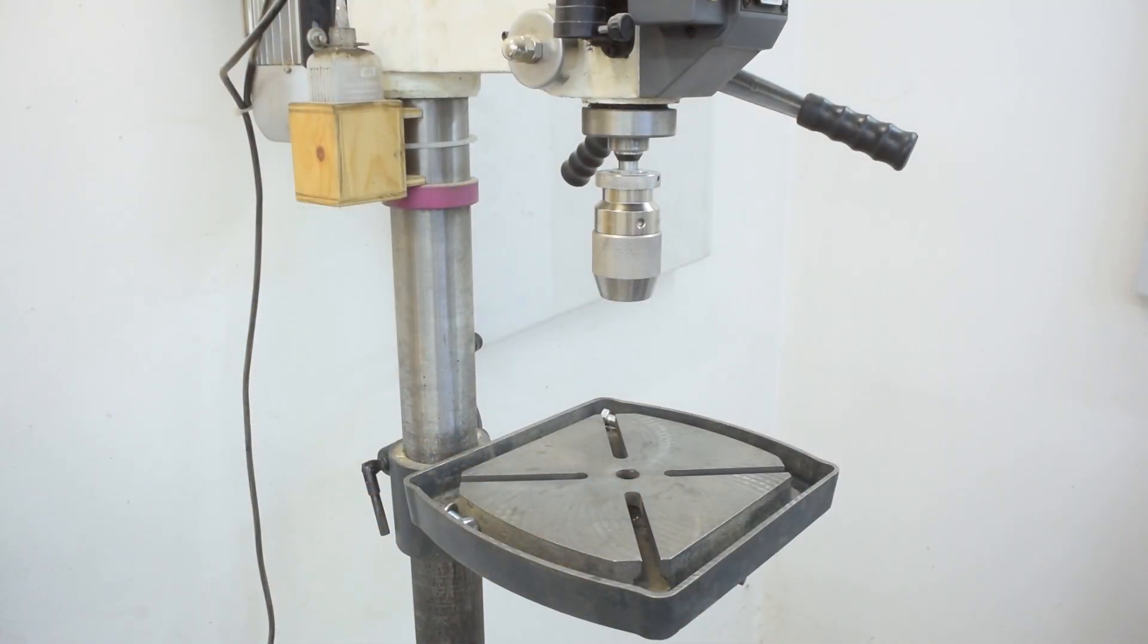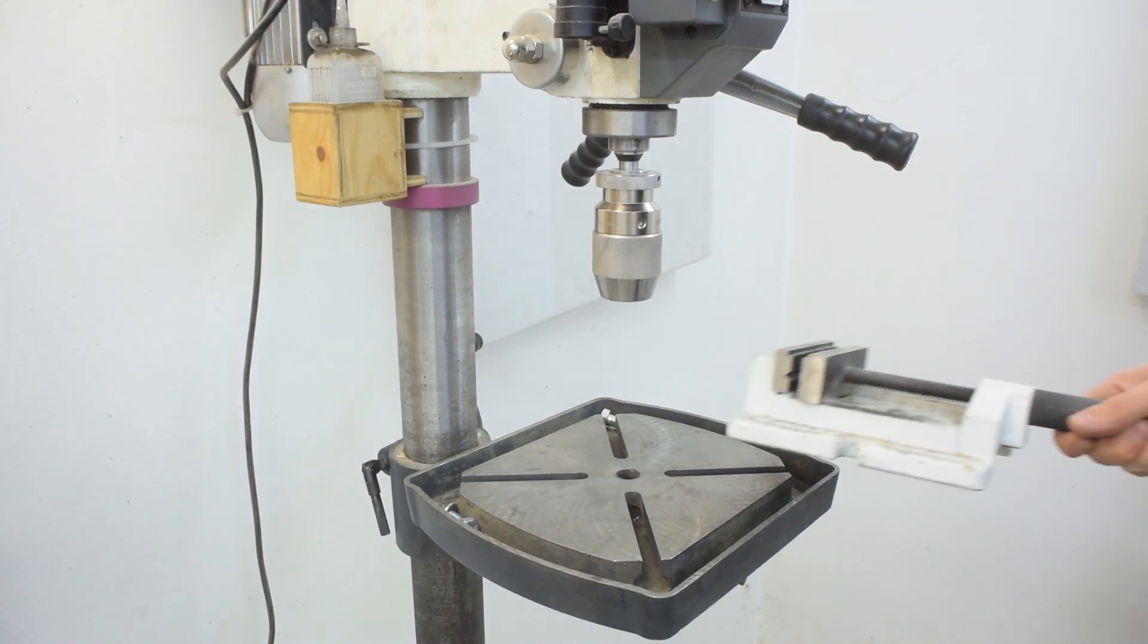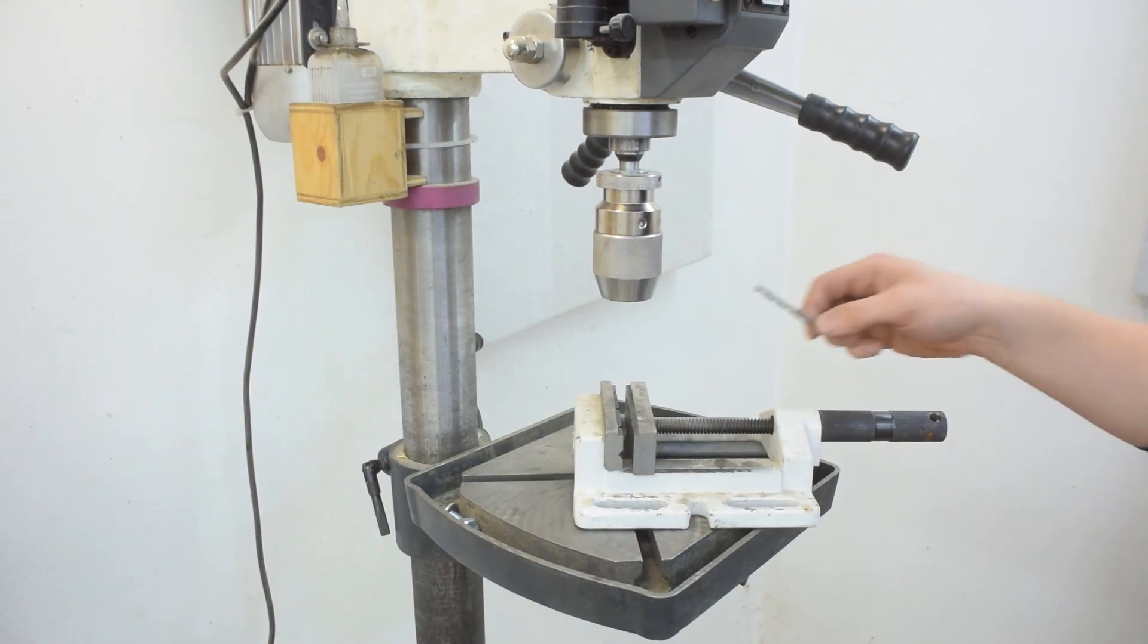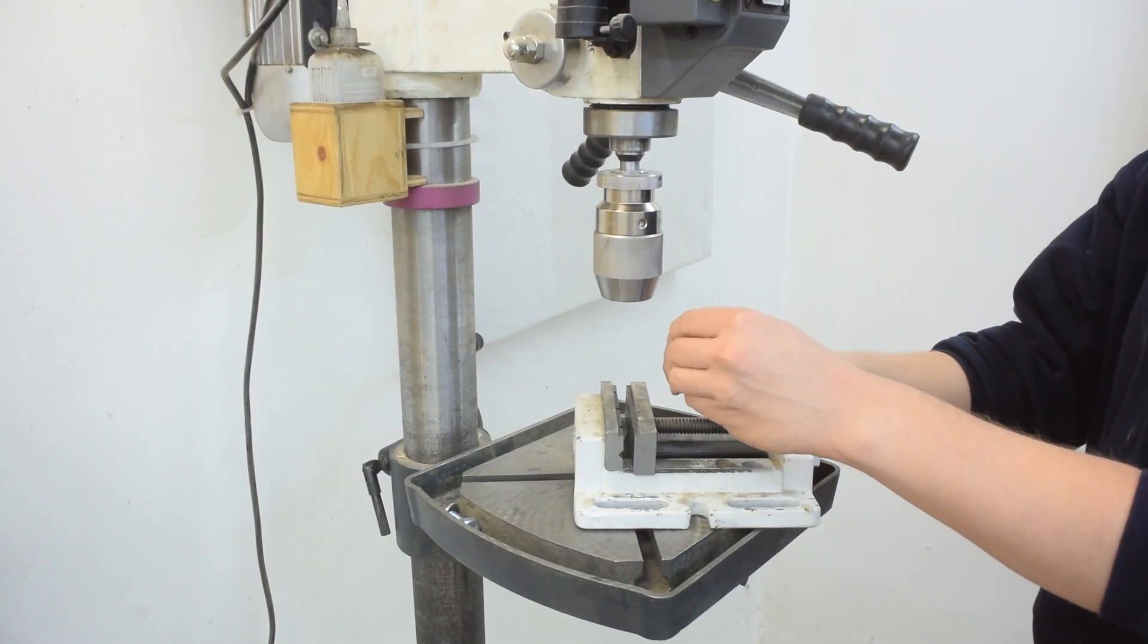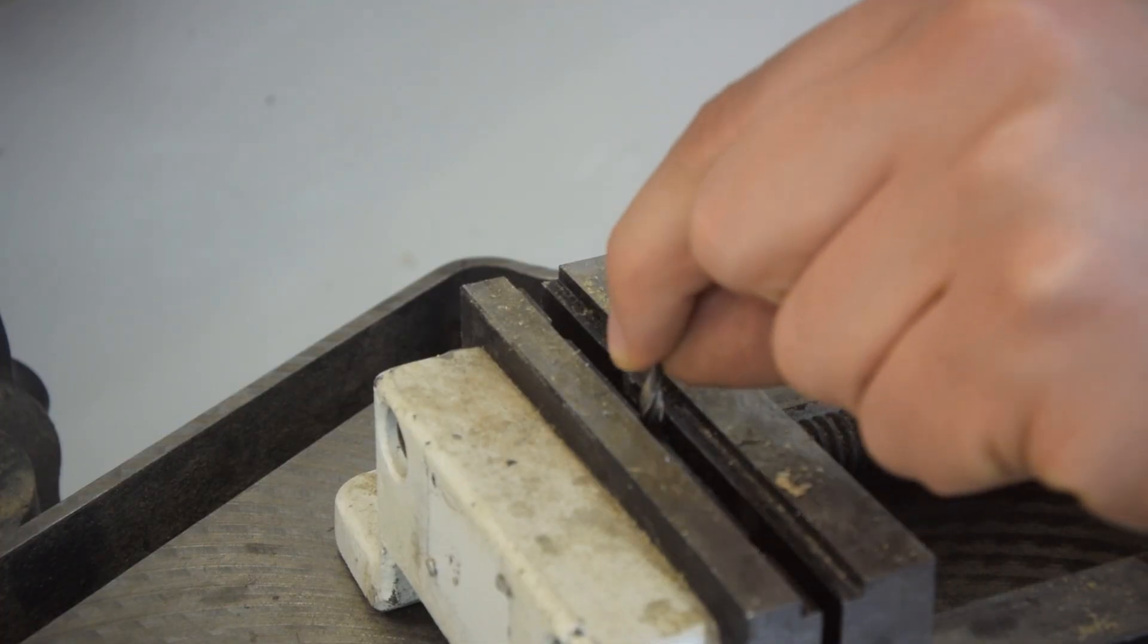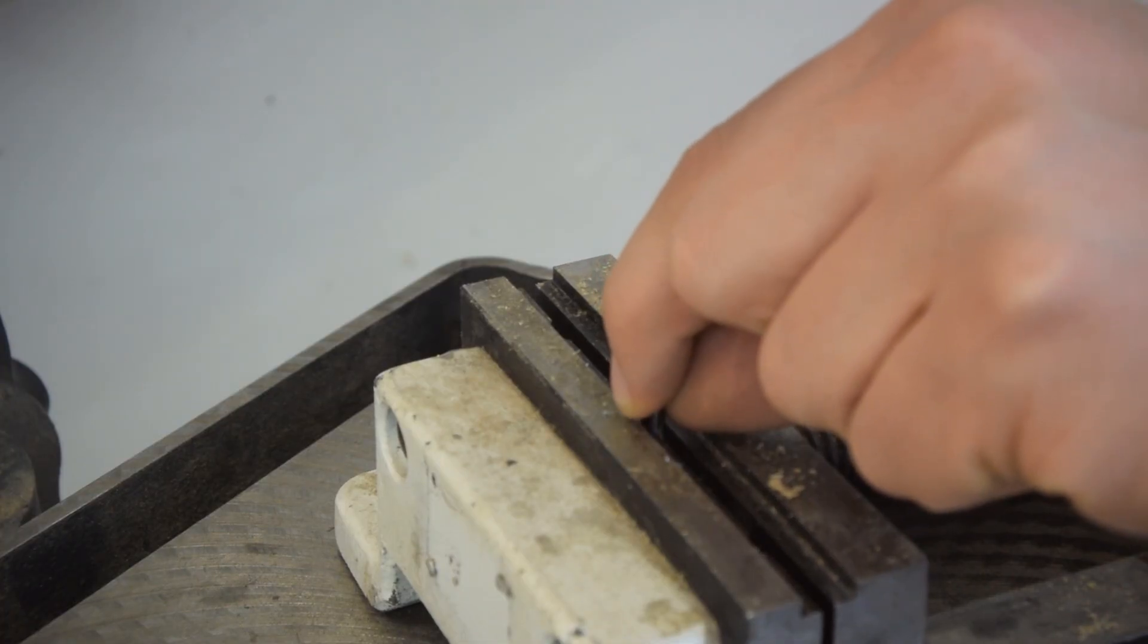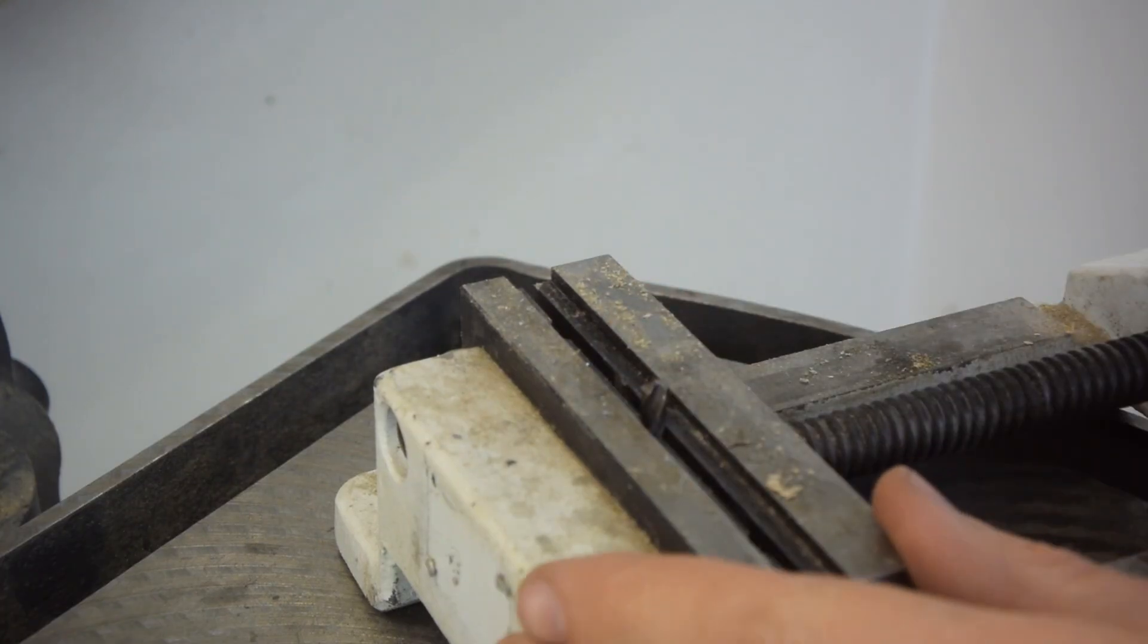So what you're gonna need is a drill press, a vise and a drill. First you're gonna clamp up the drill in the vise so that only the very tip is protruding. This is gonna keep that drill from flexing, which we definitely don't want.